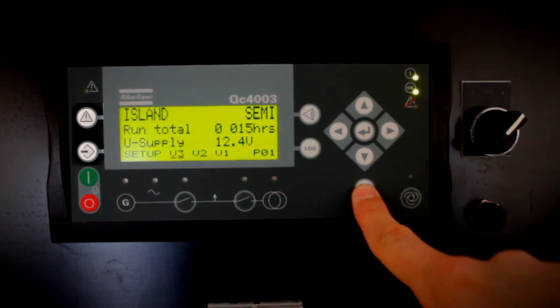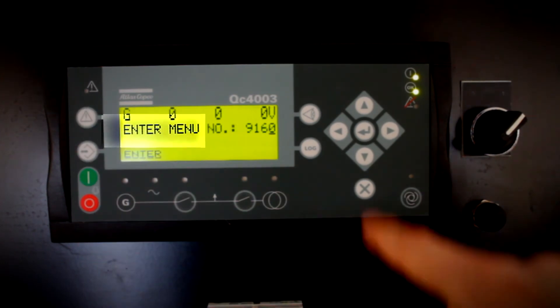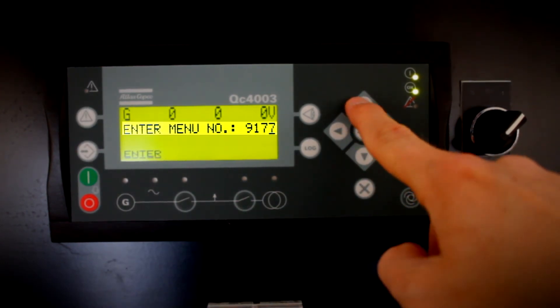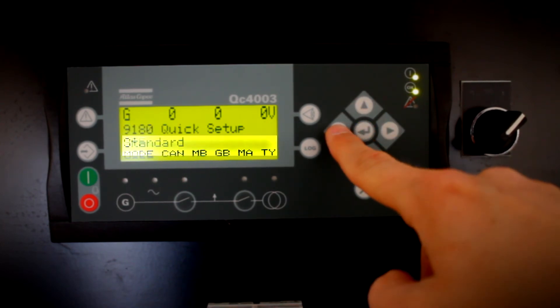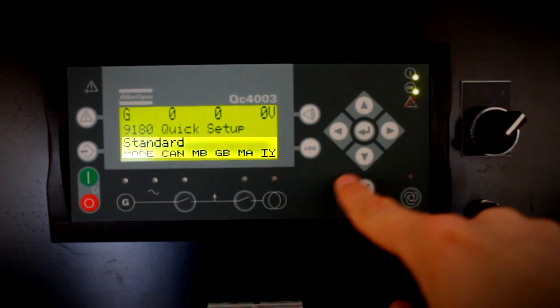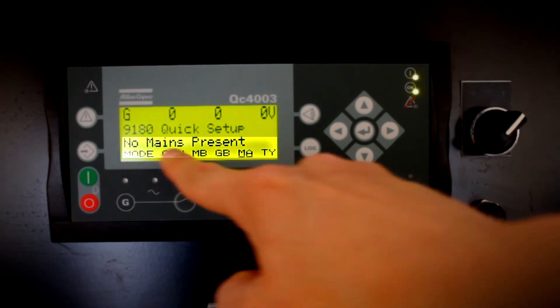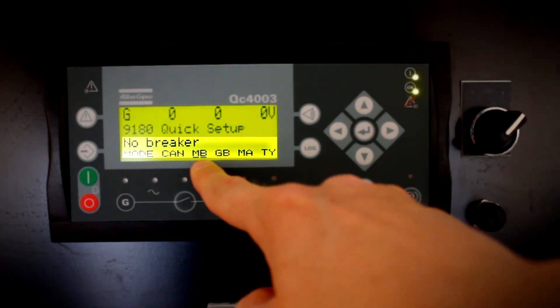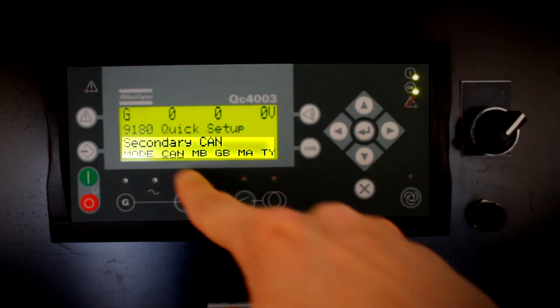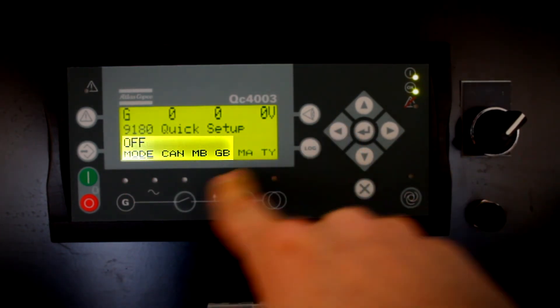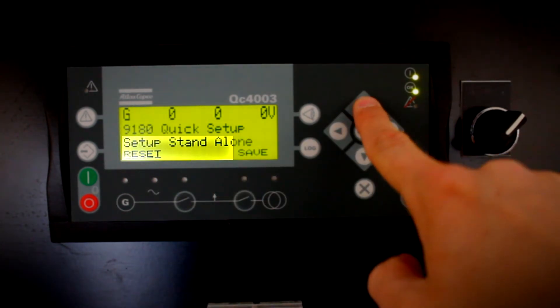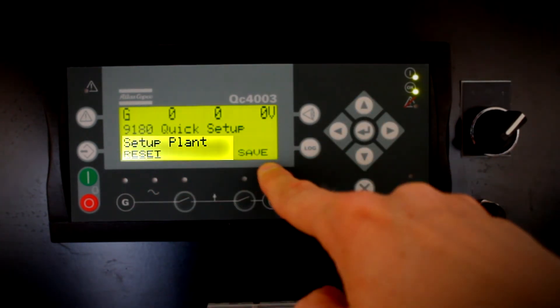Just press Jump button and scroll until parameter 9180. Select Standard Type, No mains present, GB as Pulse. Select MB, No breaker. Press Can B or Secondary. Finally, select Setup Plant.